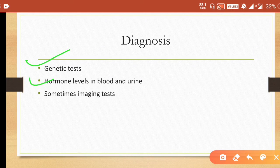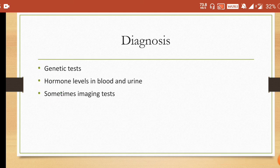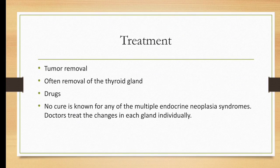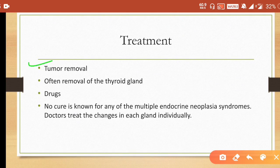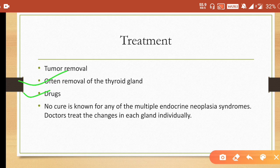Diagnosis involves genetic testing, hormone level testing in blood and urine, and imaging such as CT scan, MRI, and ultrasound. For treatment, surgical tumor removal is performed and surgeons often remove the thyroid gland. Drugs are given according to symptoms and there is no particular cure — doctors primarily do symptomatic treatment based on whichever gland is involved.